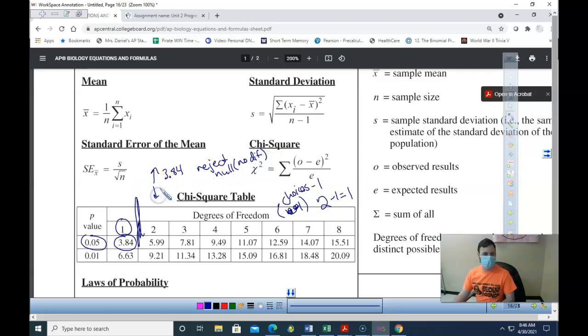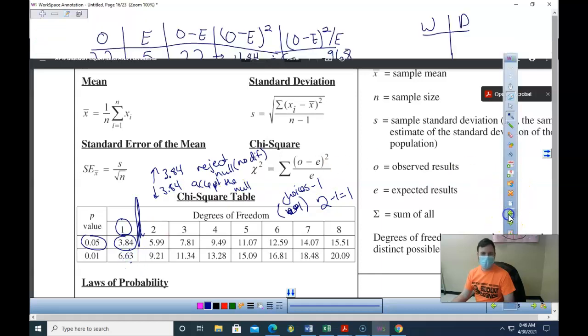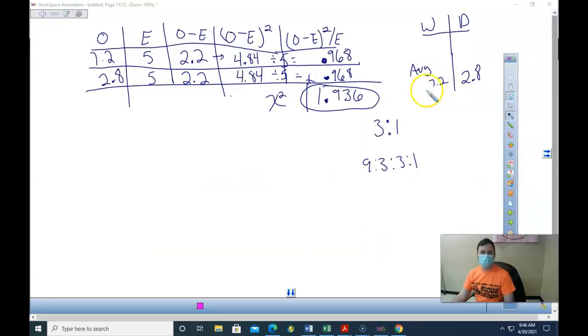If it's less than 3.84, I, for bio, I accept the null. And that would be, I say there is no difference. I cannot prove there is a difference. So for this one, we got 1.9 something, right? So our number is less than 3.84, so we would accept the null.